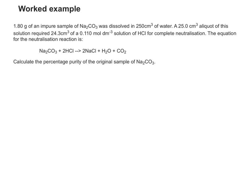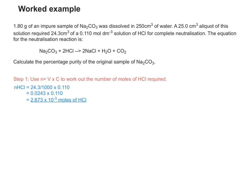So first, we can go straight in by looking at what data we have. We have the data to work out the number of moles of HCl. So we don't go anywhere near the 1.80 grams, or the 250 cm³ of water, or even the 25 cm³ sample. First, we just look at 24.3 and 0.110. This allows us to use n equals V times C. I divided 24.3 by 1000 to convert it into decimetres cubed, which is what's needed. So we've now got the number of moles of HCl: 2.673 x 10⁻³ moles of HCl.